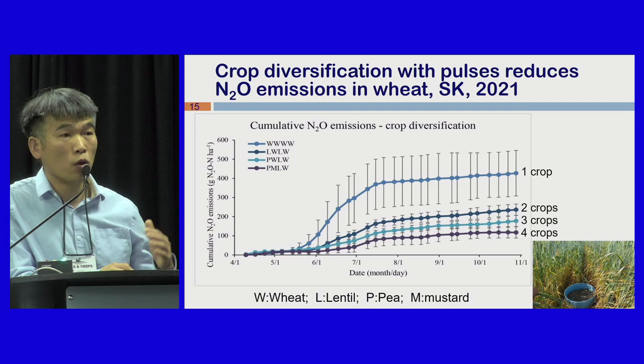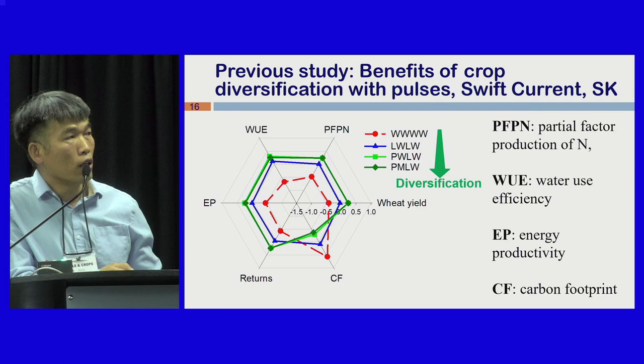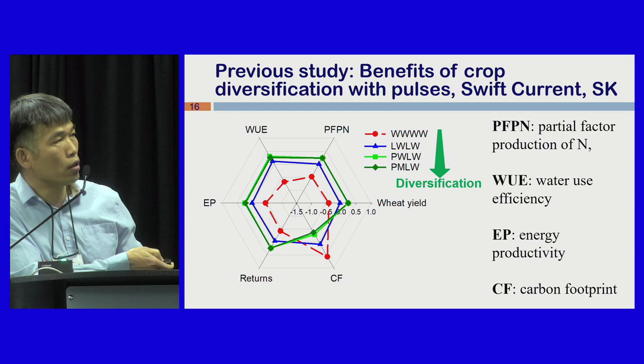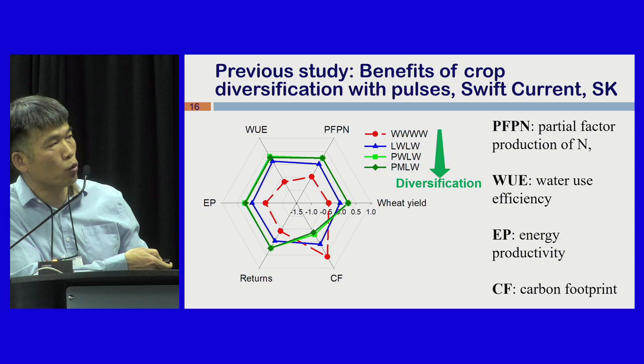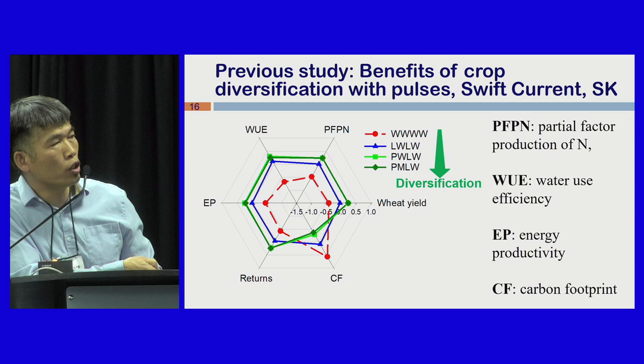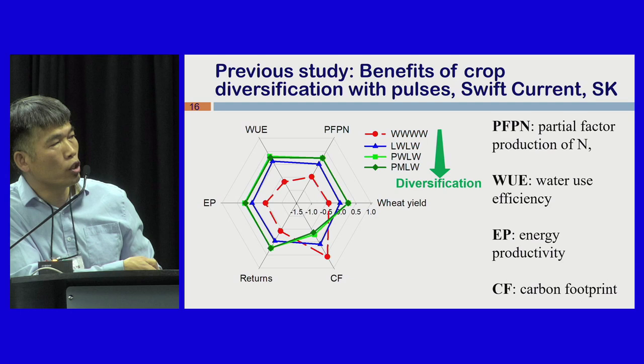We should use multiple indicators to assess the cropping system. After an 8-year study, increasing diversification — from a monoculture (red) to two crops (blue) to three and four crops (dark green) — increases yield, energy use efficiency, water use efficiency, energy productivity, and economic return, while reducing environmental impact. This clearly demonstrates the multiple-indicator benefits of crop diversification.